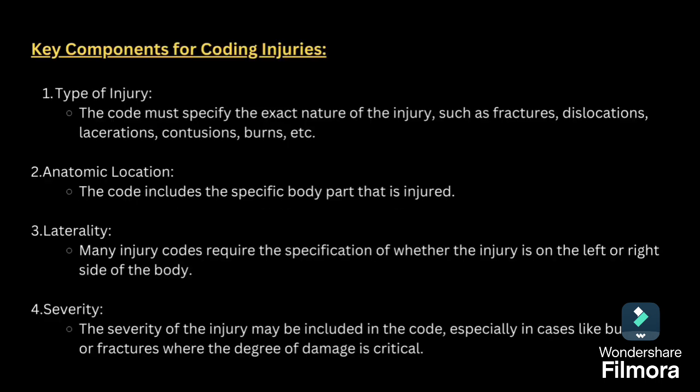For coding injuries, we should have a detailed and comprehensive system that includes the specific type, location, severity and episode of care for each injury. Key components for coding injuries: first, you have to know the type of injury — nature such as fracture, dislocation, laceration, contusion, burns, etc. Second, you have to know about the anatomical location. Third, laterality — that is, the side — and fourth, the severity.